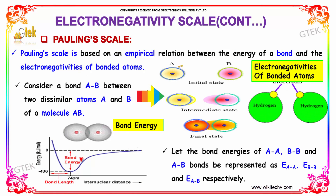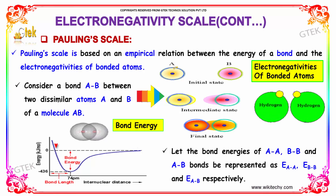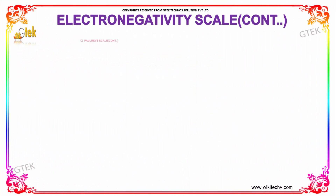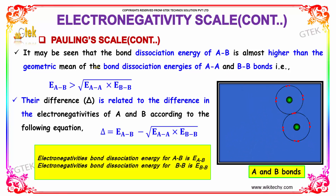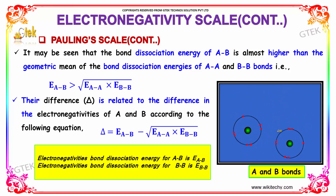Pauling scale is based on an empirical relation between the energy of a bond and the electronegativity of bonded atoms. Consider a bond AB between two dissimilar atoms A and B of molecule AB. Let the bond energies of AA, BB, and AB be represented as energy of AA, energy of BB, and energy of AB respectively. It may be seen that the bond dissociation energy of AB is almost higher than the geometric mean of the bond dissociation energies of AA and BB bonds.